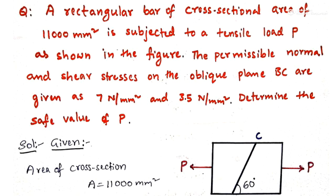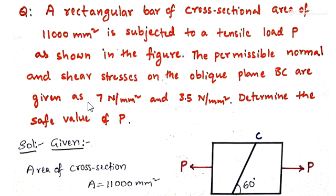We are seeing a problem from the topic principal stresses and strains. A rectangular bar of cross-sectional area of 11,000 mm² is subjected to a tensile load P as shown in the figure. The permissible normal and shear stresses on the oblique plane BC are given as 7 N/mm² and 3.5 N/mm². Determine the safe value of P.